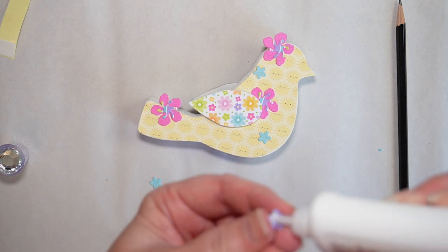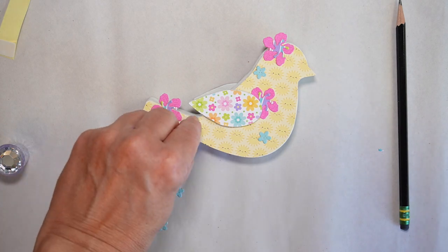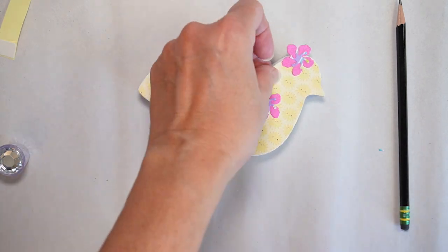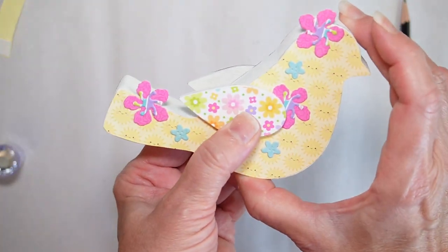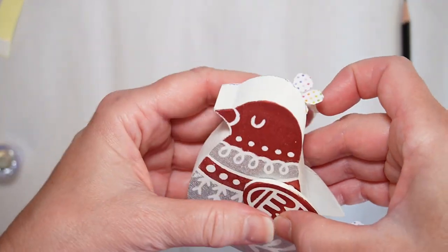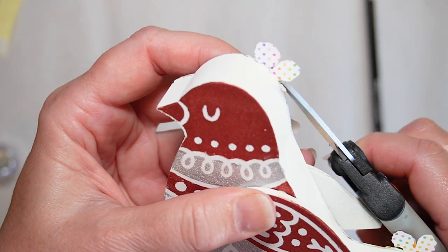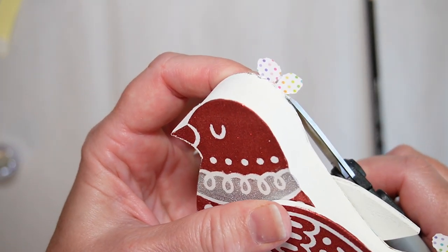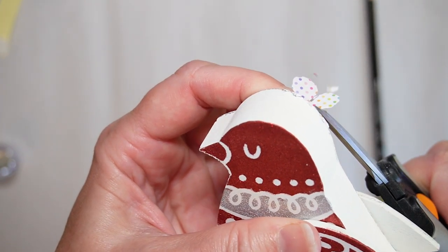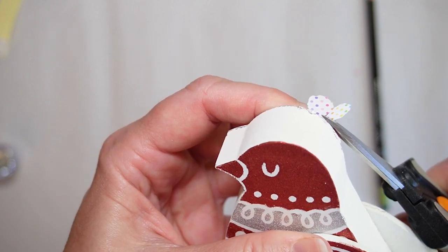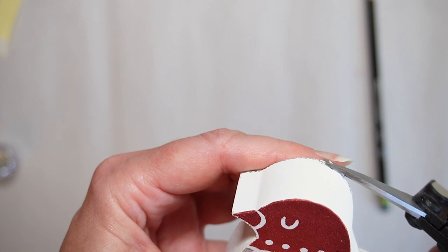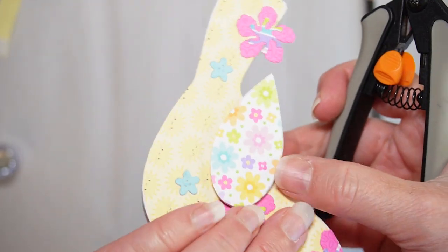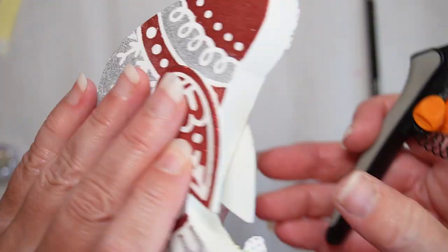And then just gluing these on in double time. All right, now I'm just snipping away what's hanging off the edge. That seemed to work pretty well. I'm just making this up as I go when I was crafting this, and it worked out.